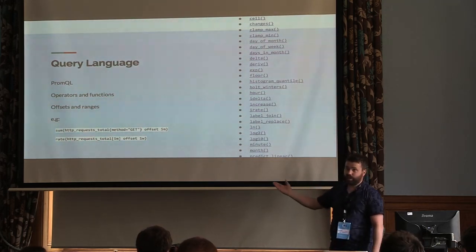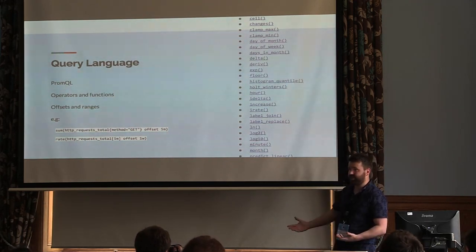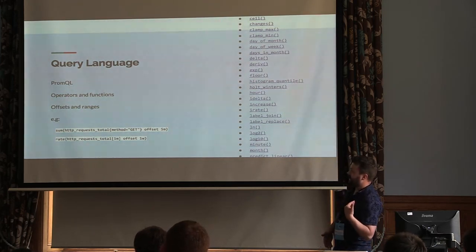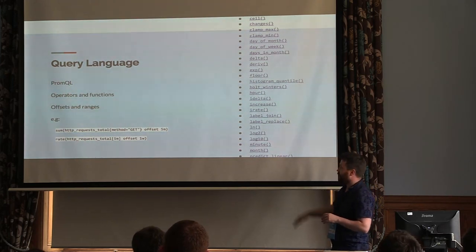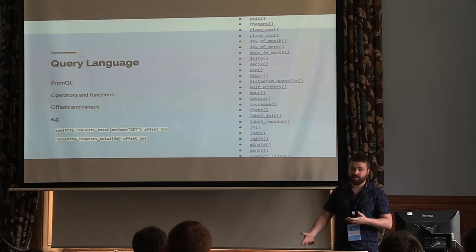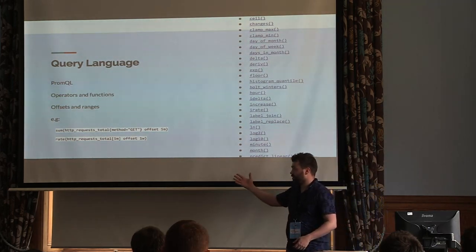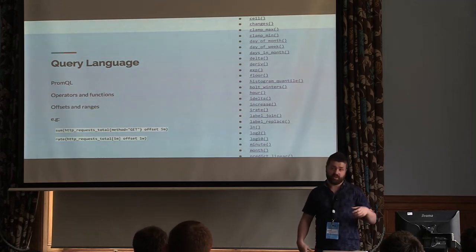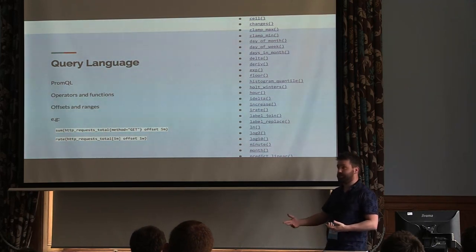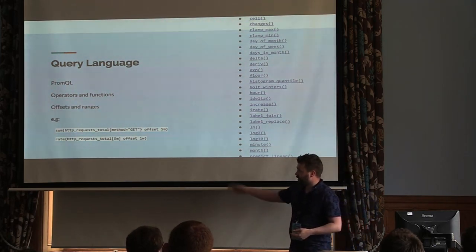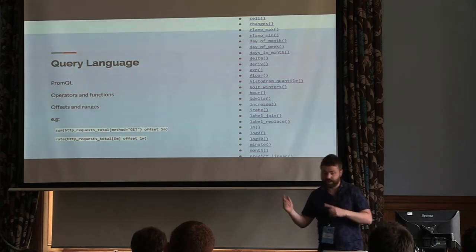All of this would be useless if we couldn't query the data being recorded. So there is PromQL — it wouldn't be a tech service if you didn't invent your own query language these days. It's fairly simple. You call out your function if you want to use one, like average, rate, ceil, or floor, and you simply wrap it around the metric that you call out in your exporter.